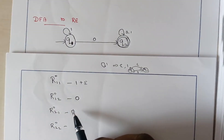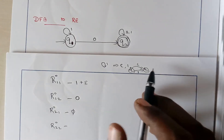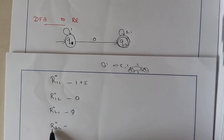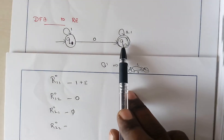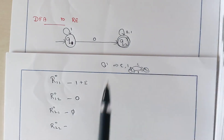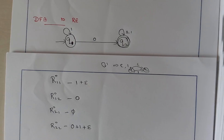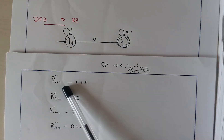When there is no transition, we use the phi symbol — the null transition. There is a difference between empty and null: empty represents without any input, and null represents no path at all. For R22 of 0, from state Q2 to itself we have a self-loop condition. The input might be either 0 or 1, so we write it as either 0 or 1. Since it is a looping condition, we also include epsilon — so it is epsilon plus 0 plus 1.